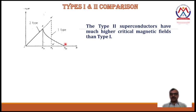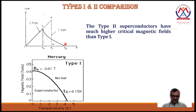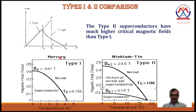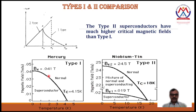Comparing Type 1 and Type 2 superconductors: Type 1 shows an abrupt or sudden decrease in magnetization, with only one critical magnetic field value. Type 2 shows a gradual decrease in magnetization and has two critical magnetic field values, Hc1 and Hc2. Type 2 superconductors also have much higher critical magnetic fields than Type 1. For example, mercury (Type 1) has a critical temperature of 4.15 Kelvin and critical magnetic field of 0.041 Tesla, whereas niobium-tin alloy (Type 2) has a critical temperature of 18 Kelvin and critical magnetic field of 24.5 Tesla, making Type 2 superconductors more suitable for practical applications.